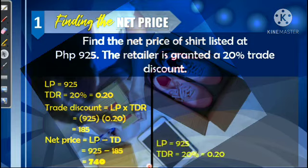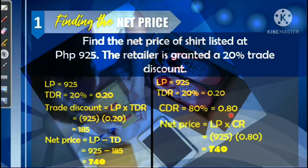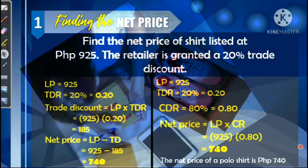Now let us show the second method using the complement method. First, find the complement discount rate: 100% − 20% = 80%, or 0.80. Then find the net price: list price × complement rate = 925 × 0.80 = 740 pesos. We get the same answer. So the net price of the polo shirt is 740 pesos. You may use either the discount method or the complement method.